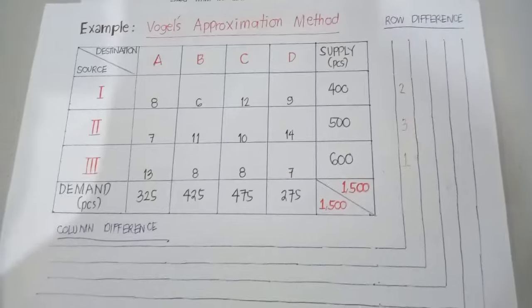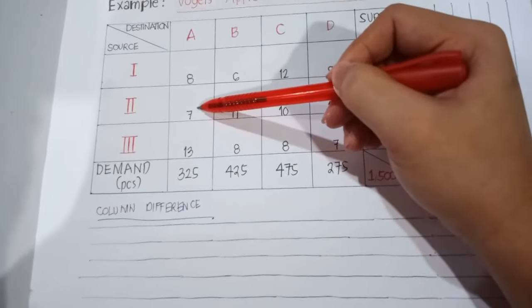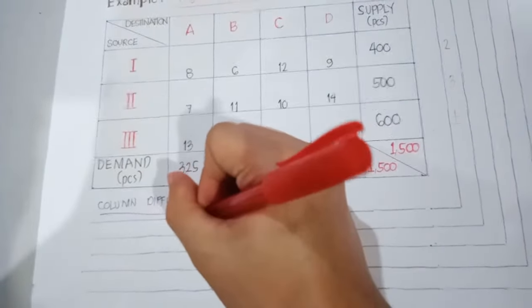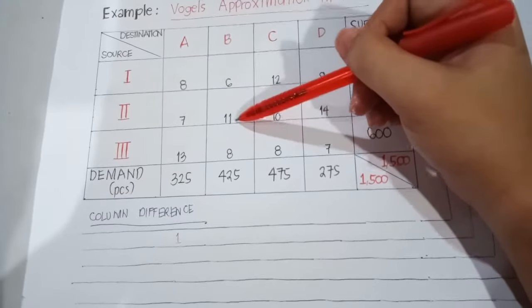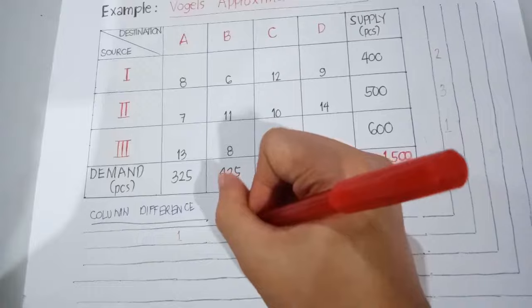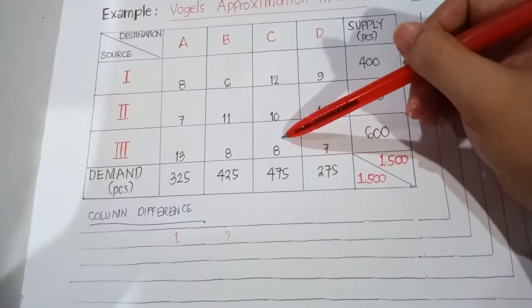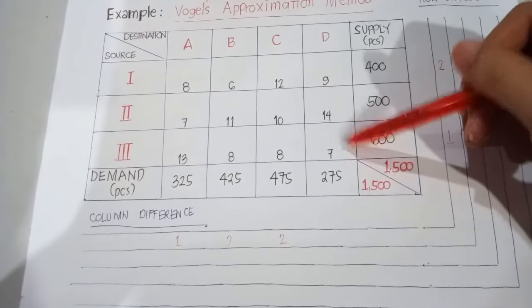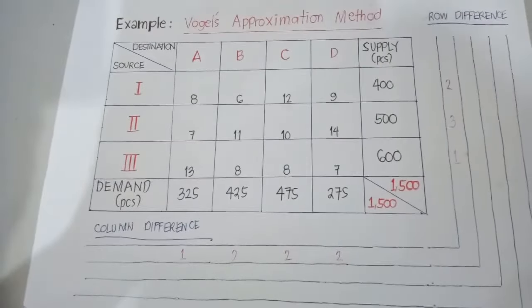For column differences: column A has least cost 7 and second least 8, giving a difference of 1. Column B has least cost 6 and second least 8, giving a difference of 2. Column C has least cost 8 and second least 10, giving a difference of 2. Column D has least cost 7 and second least 9, giving a difference of 2.